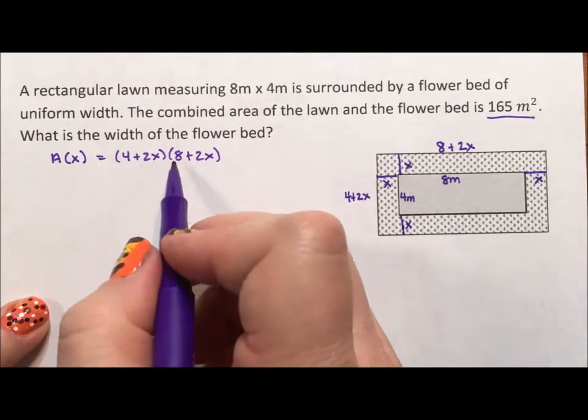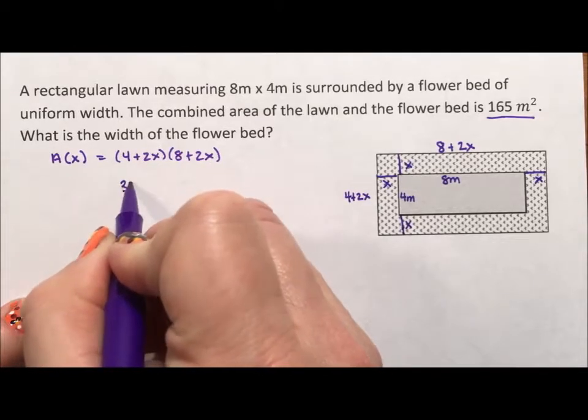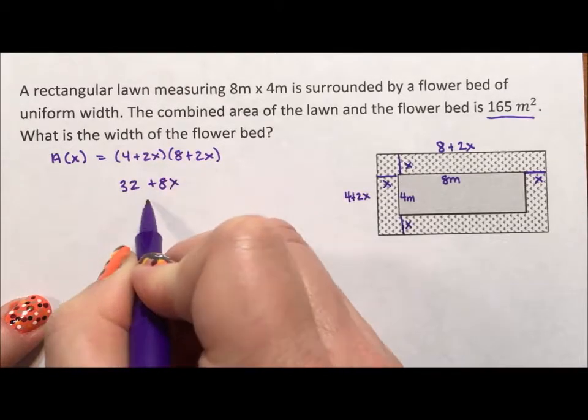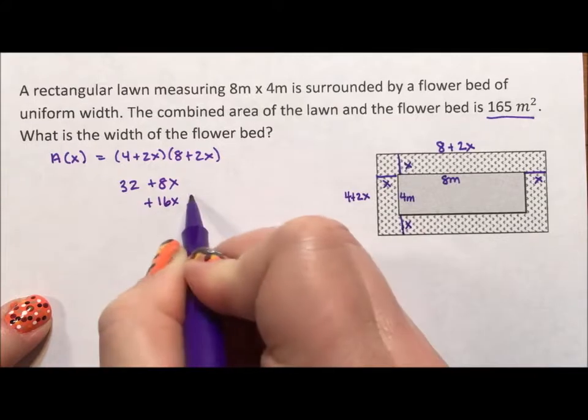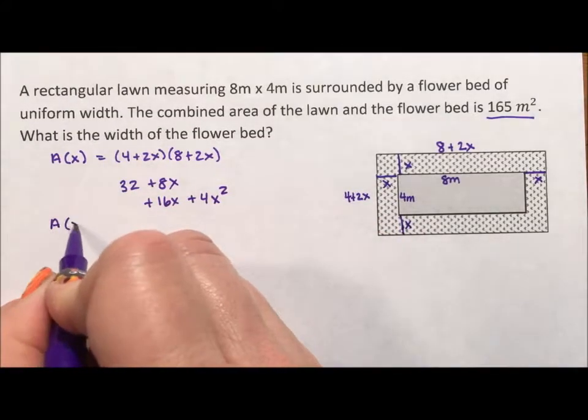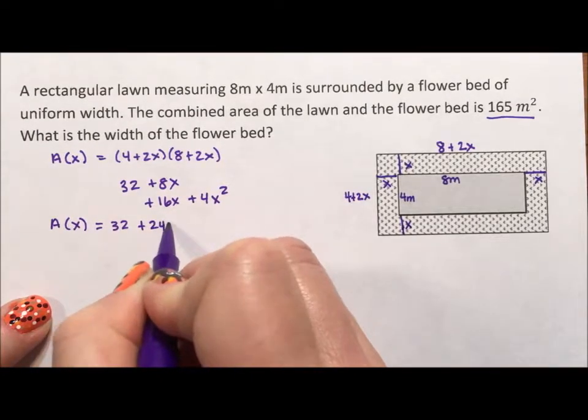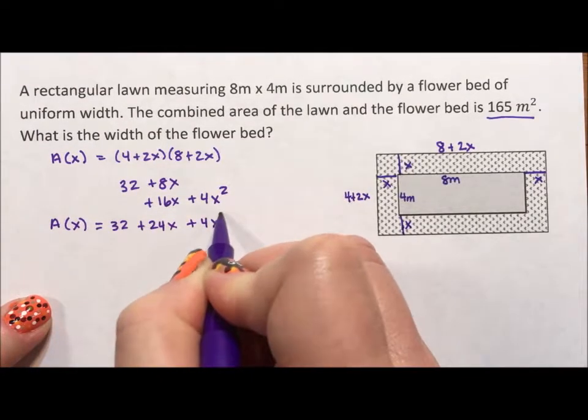I need to multiply this out so that I have 32 plus 8x plus 16x plus 4x squared. So my generic equation for area is 32 plus 24x plus 4x squared.